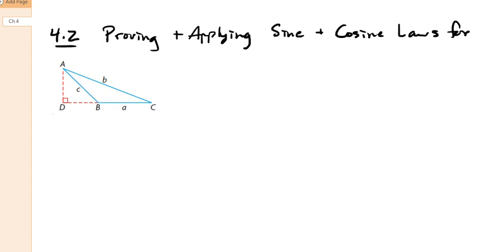So in section 4.2, we're going to talk about the sine and cosine law again. But the big difference is we're talking about obtuse triangles. So that's a triangle that has an obtuse angle in it.